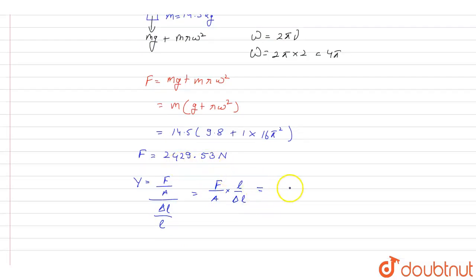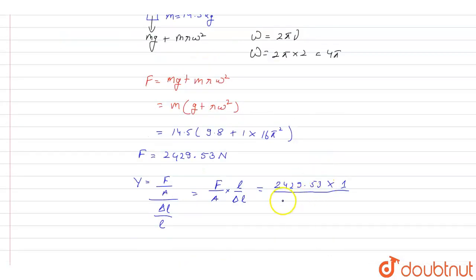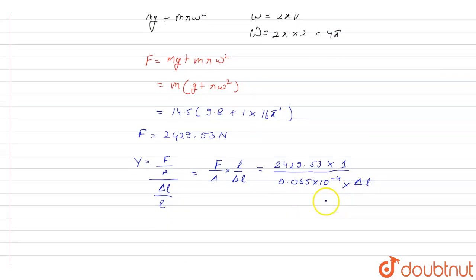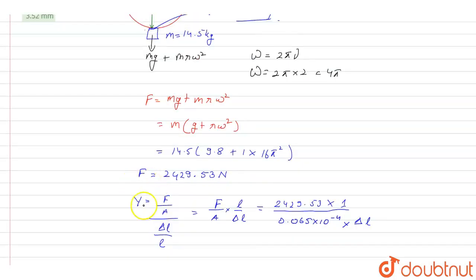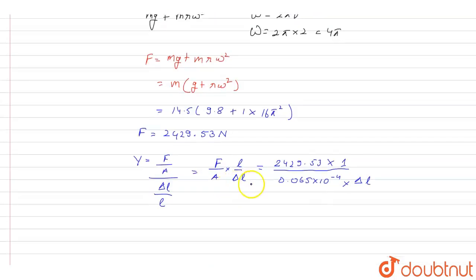Therefore force is 2429.53 into length of the wire is 1 meter divided by area of cross section is 0.065 into 10 to the minus 4, multiplied by delta L. That is elongation. From here, we also know that Y, the Young's modulus of the steel is 2 into 10 to the 11. So I can calculate delta L from this equation.